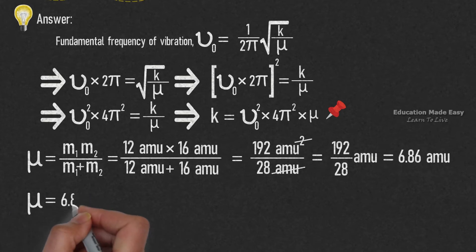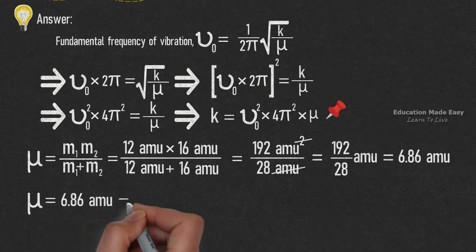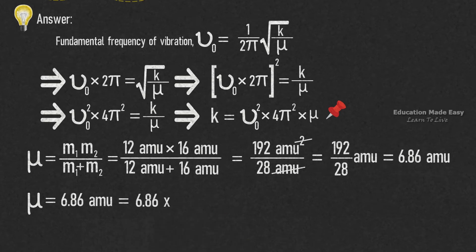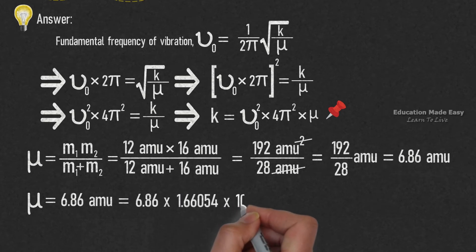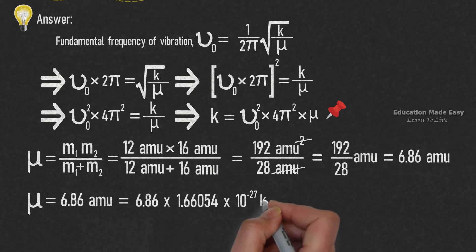Now let us convert the value of μ into SI units. μ = 6.86 × 1.66054 × 10⁻²⁷ kg. Let us pin this value for use in the final calculation.